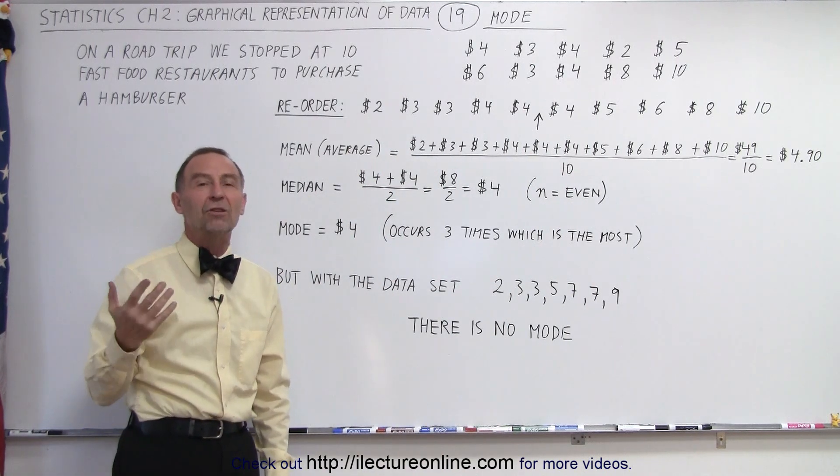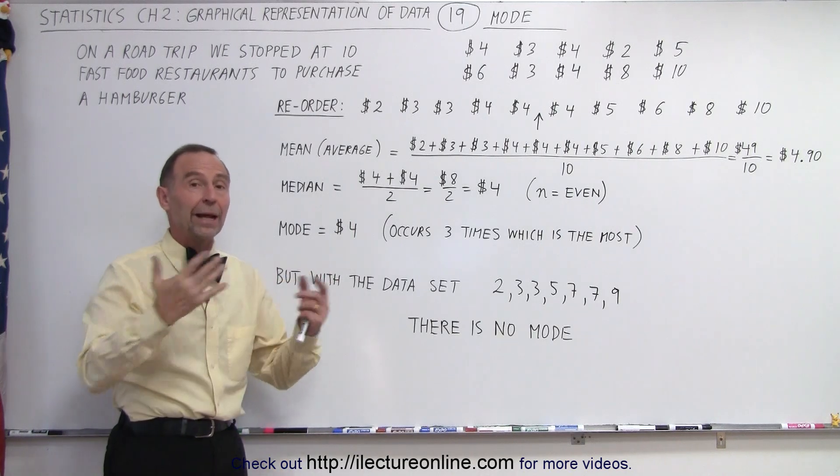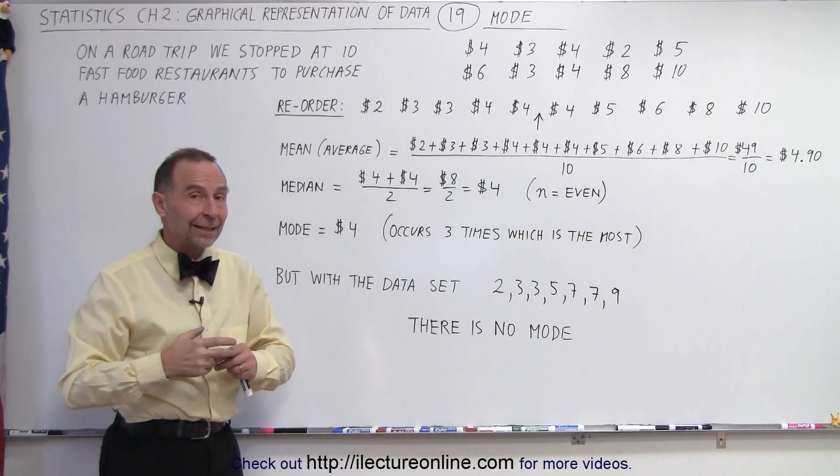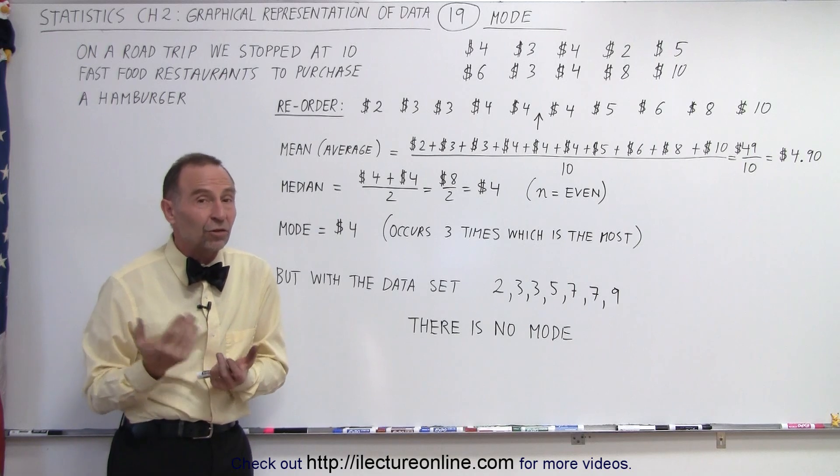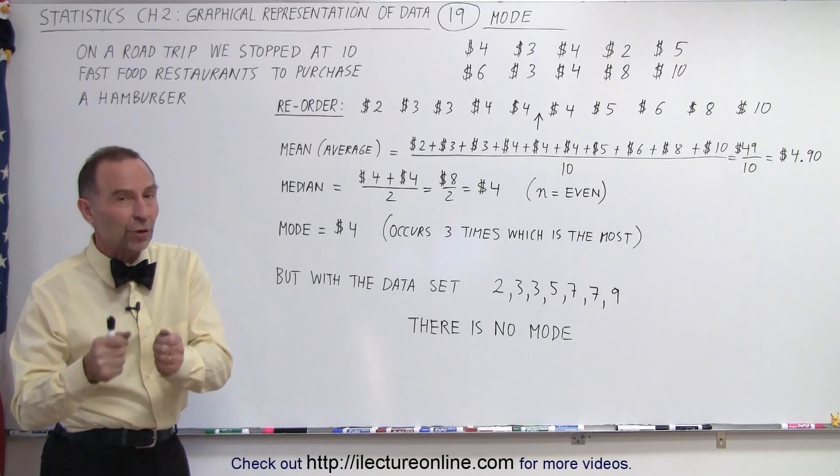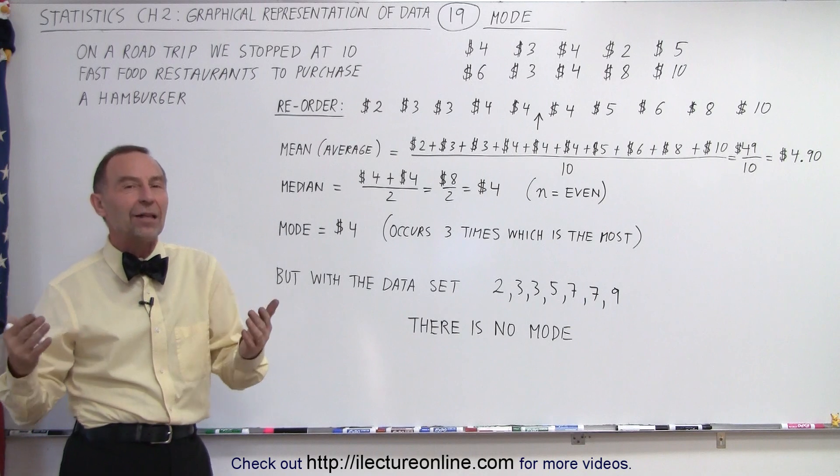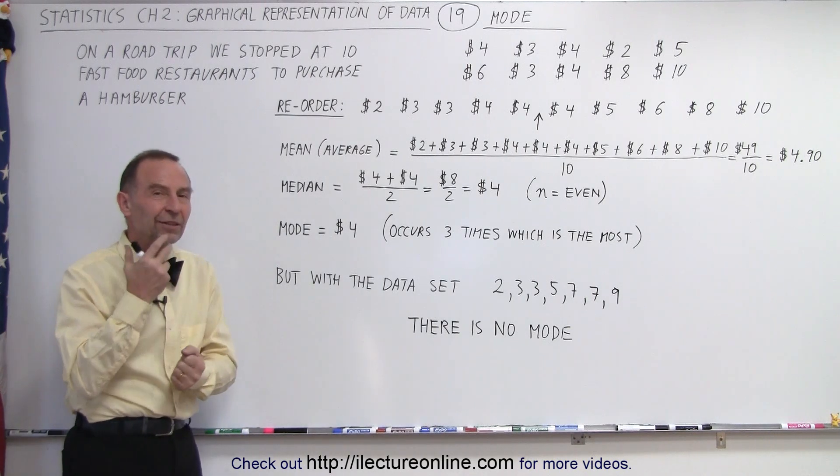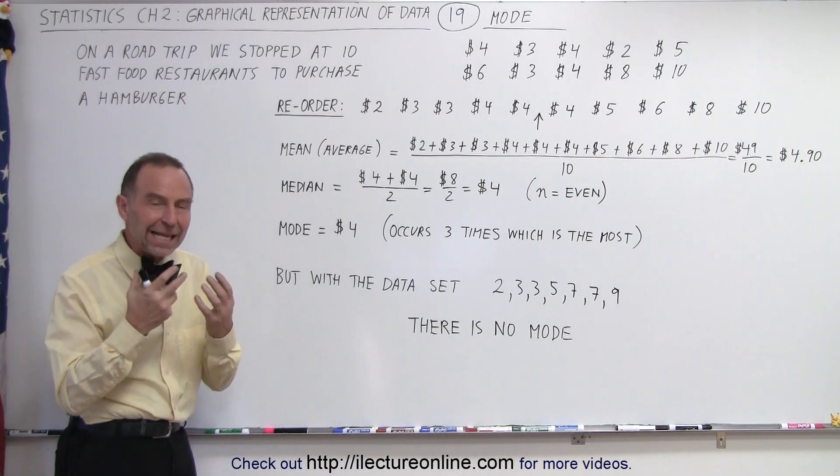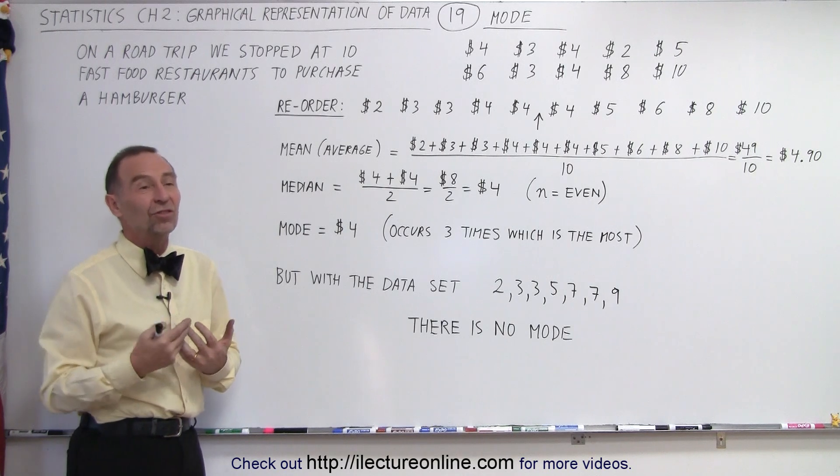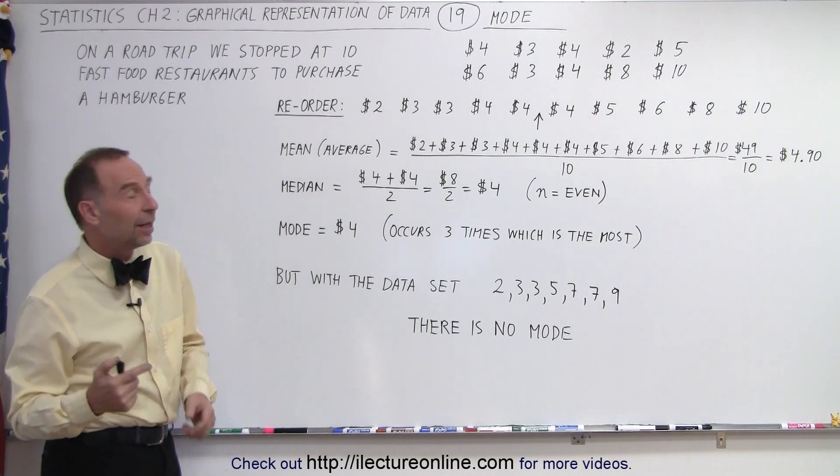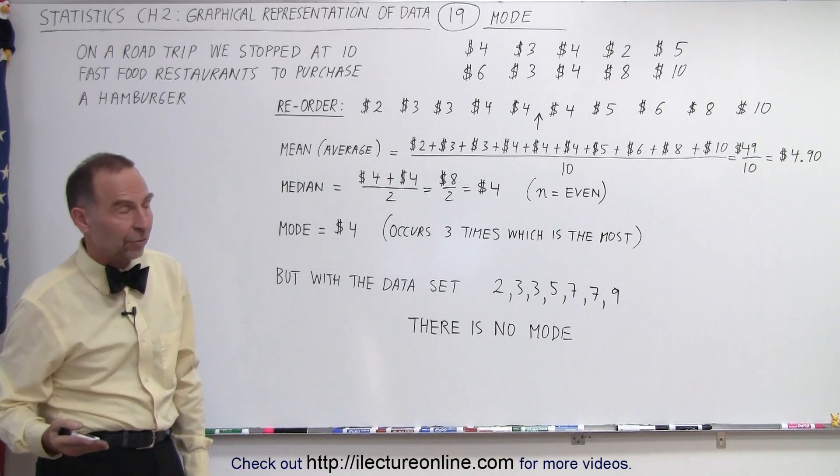The mode gives you an indication that if you walk into a burger place at random and buy a burger, the most likely cost is going to be four dollars. More often will you pay four dollars than any other value, so the mode has a different connotation, a different meaning, a different result. It just says that there's a higher probability that you'll pay four dollars than any other amount.